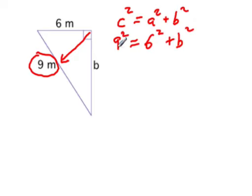And so now we're going to simplify, so this is 81 is equal to 36 plus B squared.